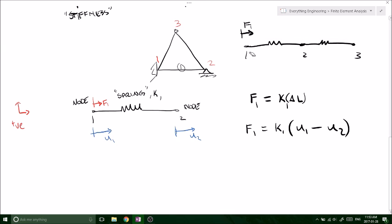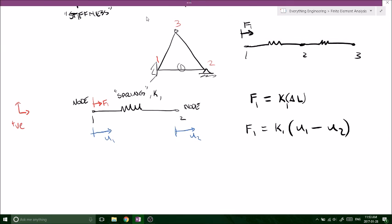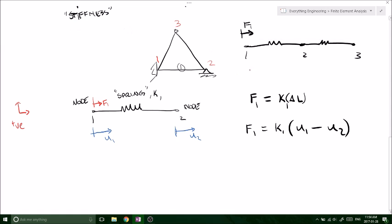If we were to apply a force at node 1, it would displace a distance of U1. But there's also the potential that node 2 can also displace, right? So the total distance that node 1 would move would be U1 minus U2.